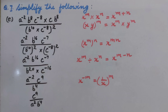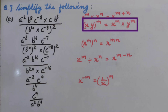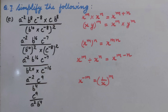We need to multiply same bases here. So we will use the law: X raised to the power M multiplied by X raised to the power N equals X raised to the power M plus N. And since we have a whole power of a product of two bases, we will also use the law: XY whole raised to the power M equals X raised to the power M multiplied by Y raised to the power M.